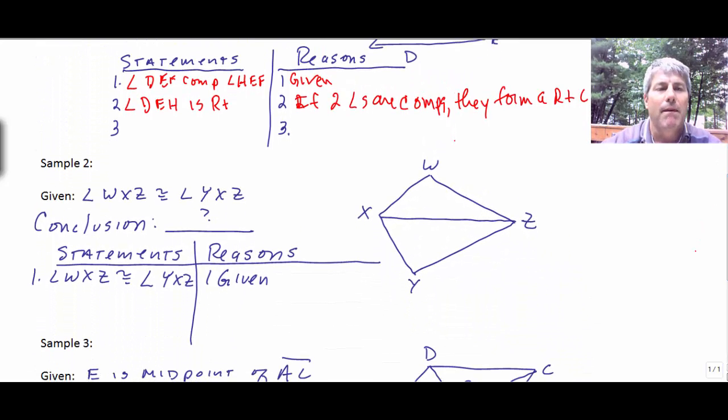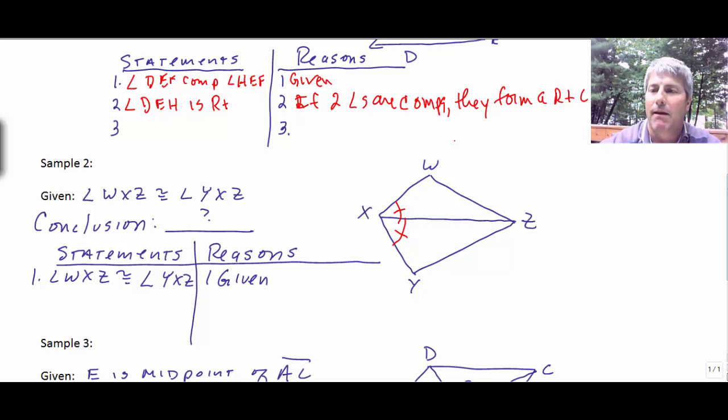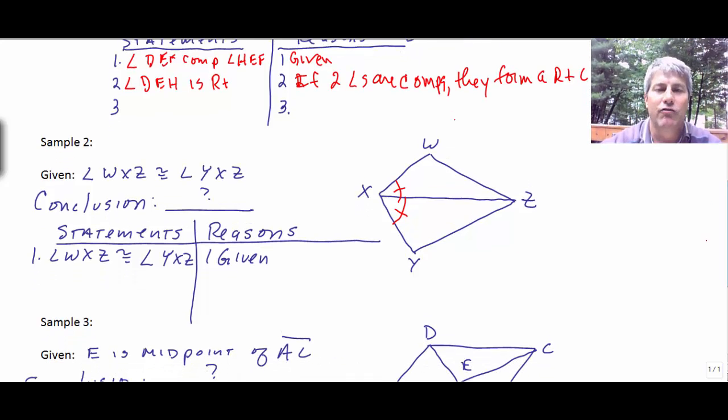Sample two, angle WXZ is congruent to YXZ. So, I'm going to mark my diagram right away. Angle WXZ is congruent to YXZ. And that's all we know for sure is true. But, we should be able to draw a conclusion from that.